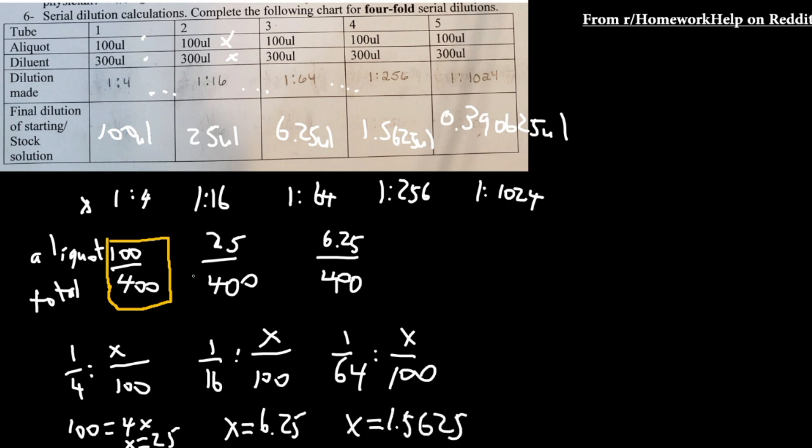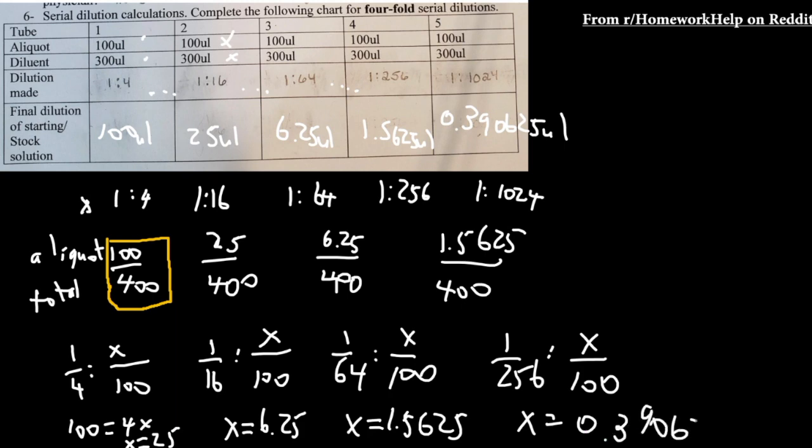And you'll do it again. So just double checking your answer, you will get a 1 to 256 ratio. So that's exactly what we've been doing so far. And 100 divided by 256 to solve for x, you're going to get 0.390625.